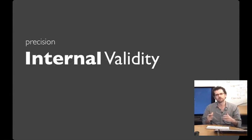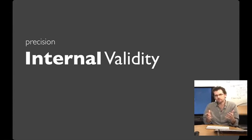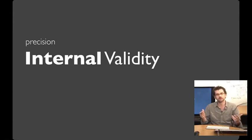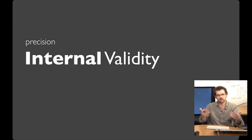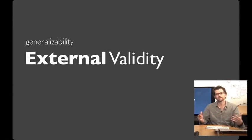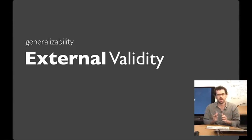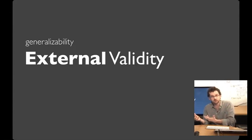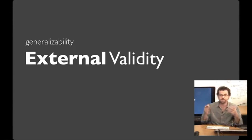Your independent variables are the things you manipulate; your dependent variables are the things you measure. How reliable is your experiment — if you ran it again, would you see the same results? That's the internal validity. To have a precise experiment you need to remove confounding factors and study enough people so results are unlikely to be due to chance. External validity is the generalizability of your results — does this apply only to 18-year-olds in a college classroom, or does it apply to everybody in the world?